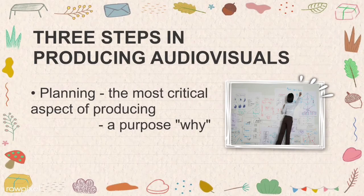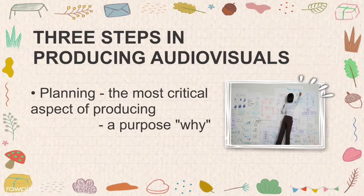There are three steps in producing audiovisuals. First is planning — the most critical aspect of producing audiovisuals. It involves identifying the purpose of why you're making it, brainstorming how to do it, and preparation. This step requires brainstorming the purpose, creating the content needed, and planning the video.